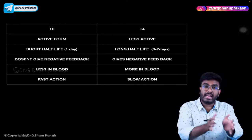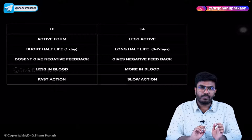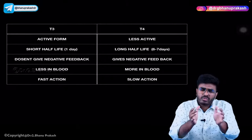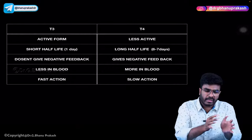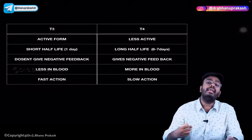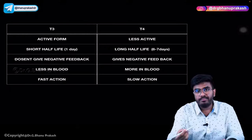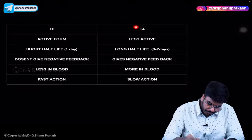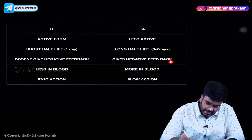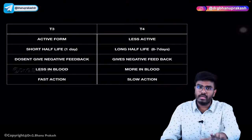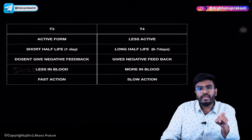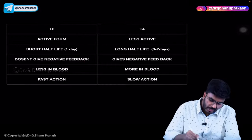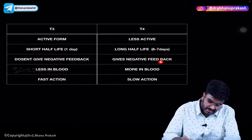T4 is the actual storage form. Whenever T3 is needed, T4 is converted into T3. The actual storage determines negative feedback — whenever you have proper stores, negative feedback is given to the pituitary gland and hypothalamus. So T4 is the one that gives negative feedback. Whenever there is sufficient T4, it down-regulates the hypothalamus and pituitary. T3 does not give negative feedback — T4 does.